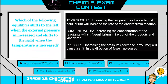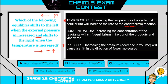Let's look at our last example — a different type of question, but still Le Chatelier's principle. Which of the following equilibria shifts to the left when external pressure is increased, and shifts to the right when temperature is increased? So we have to look at two different things: temperature increase and pressure increase. When temperature increases, we prefer the endothermic reaction. When pressure increases, we go in the direction of fewer molecules. In this case, it looks like every reaction involves gases, so we don't have to worry about the solid issue from the previous question.